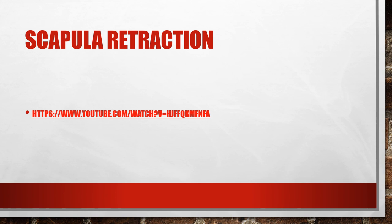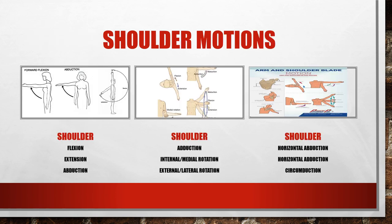The shoulder complex can perform flexion, extension, abduction, adduction, internal (medial) rotation, external (lateral) rotation, horizontal abduction, and horizontal adduction. The combination of all shoulder movements is considered circumduction.